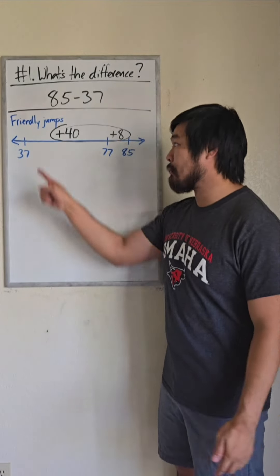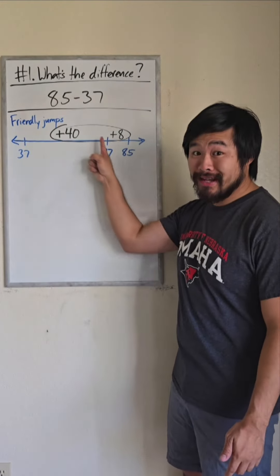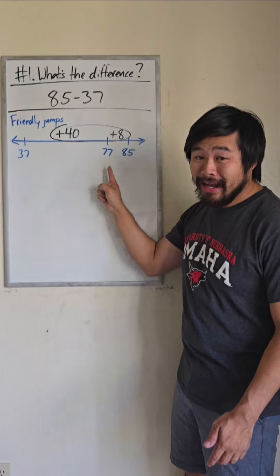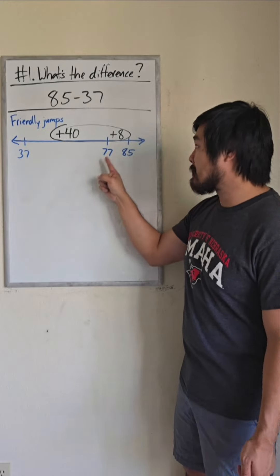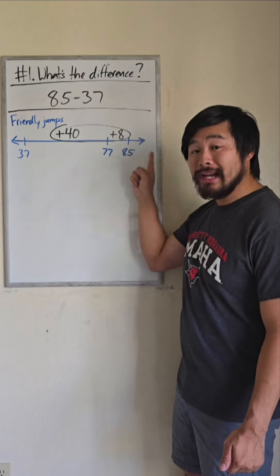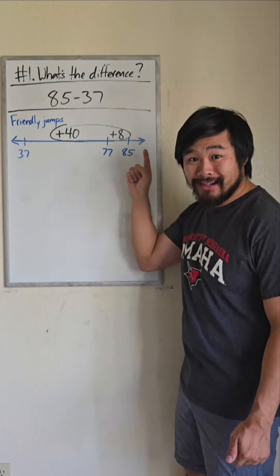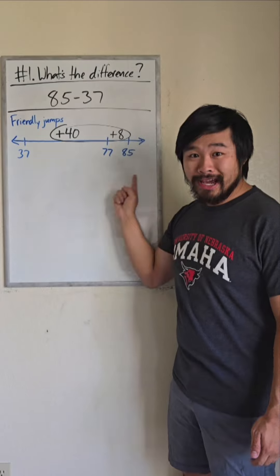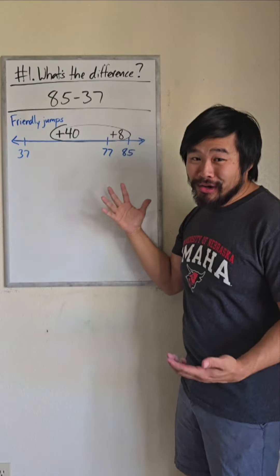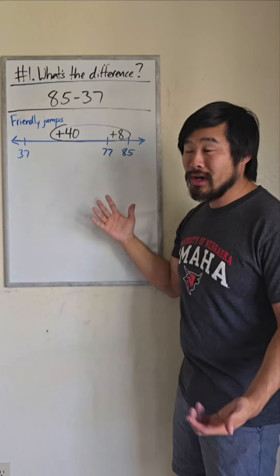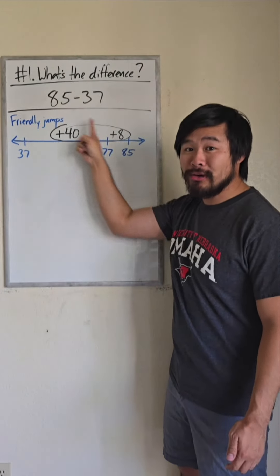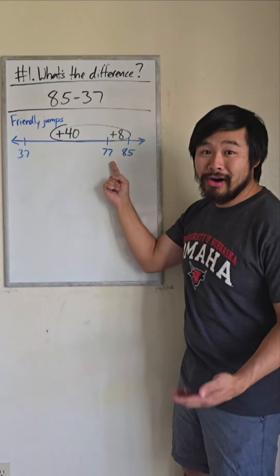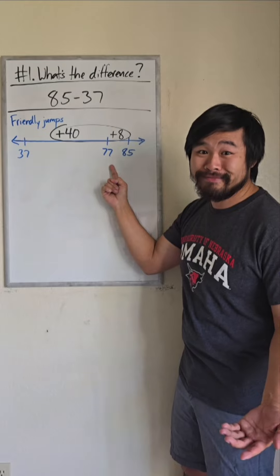One way that I would do this is jump 40 from 37 to land on 77, and I know the difference between 77 and 85 is 8. So in total, I jumped 48. I call this method friendly jumps because the jumps are friendly, even though I'm not landing on a nice number.